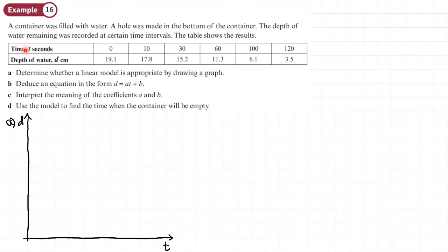So first of all, we're going to draw some axes. Now, we always draw the top row on the x-axis and the bottom row always goes on the y-axis. And then we fill in some appropriate values on the axis here. And now we're going to plot these points. So here's my points plotted.